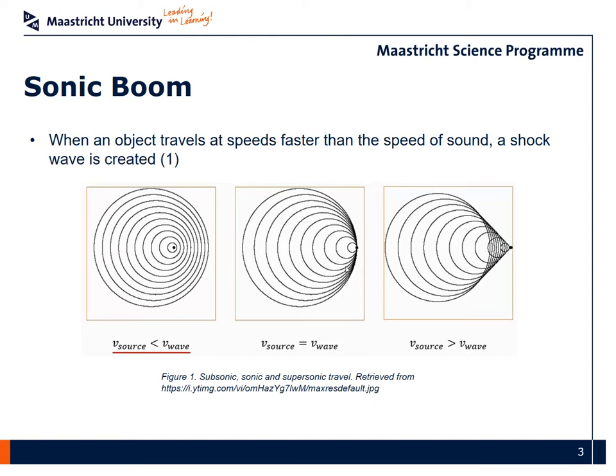At subsonic speeds, what we observe is a Doppler effect. That is, the source of waves is moving, and therefore there is an increase of the frequency of the waves it is emitting in the direction in which the source is moving. But there are no sharp increases, sharp changes of pressure.